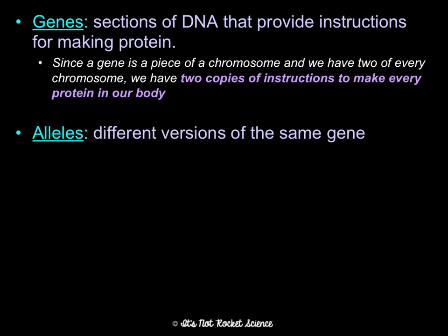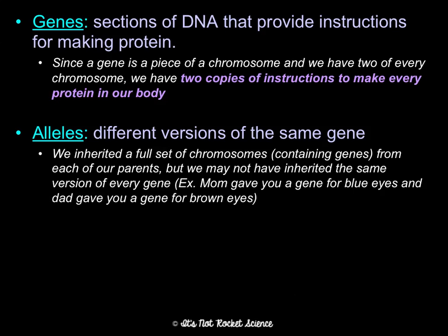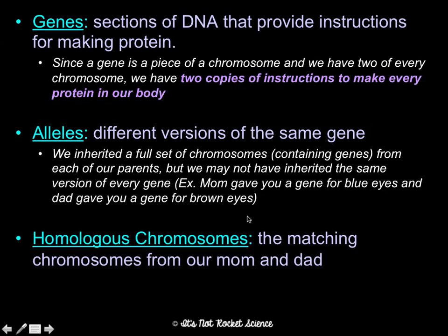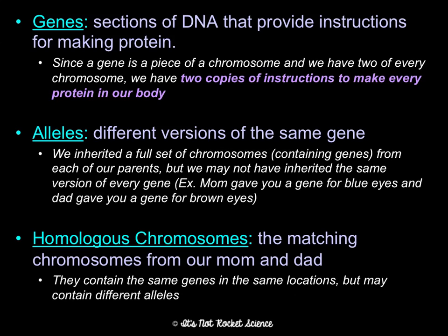Alleles are different versions of the same gene. Let's say we have a gene for eye color. The gene is eye color, and you have a chromosome that has a gene for eye color from mom, and a chromosome that has a gene for eye color from dad. But those genes may say different things — dad's may say brown eyes, and mom's may say blue eyes. The brown gene versus the blue gene are the alleles; they're different versions of the same gene. You inherit a full set of chromosomes from each of your parents, but you may not have inherited the same version of every gene. The two alleles work together to determine what's going to be expressed. Remember, homologous chromosomes are the matching chromosomes from mom and dad — they have the same genes in the same locations, but they may have different alleles on them.